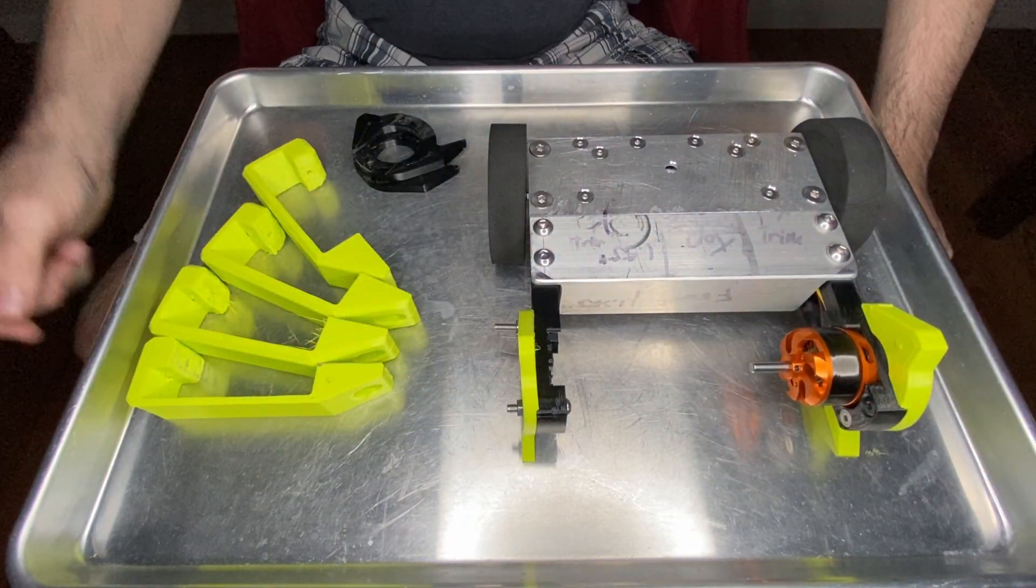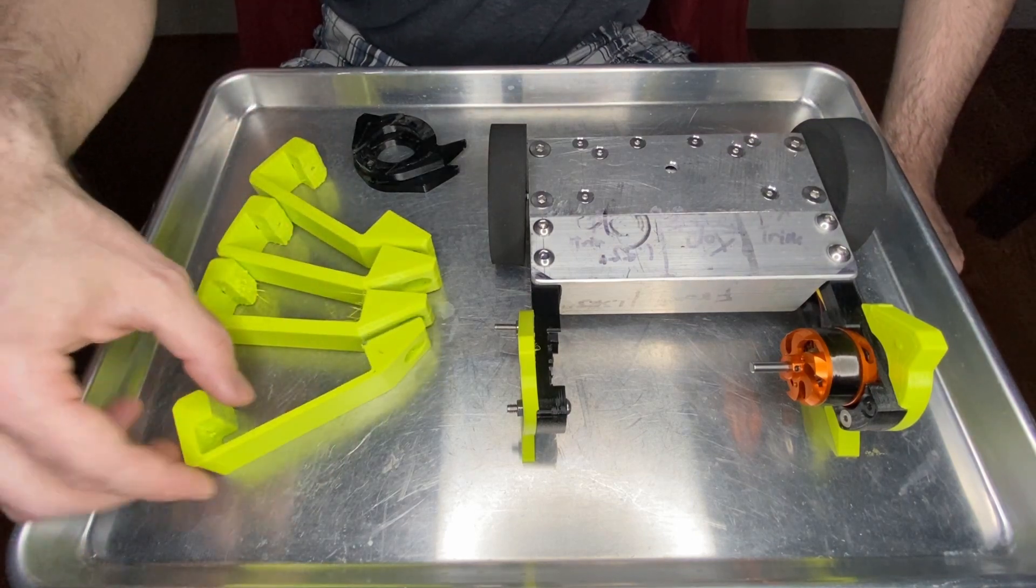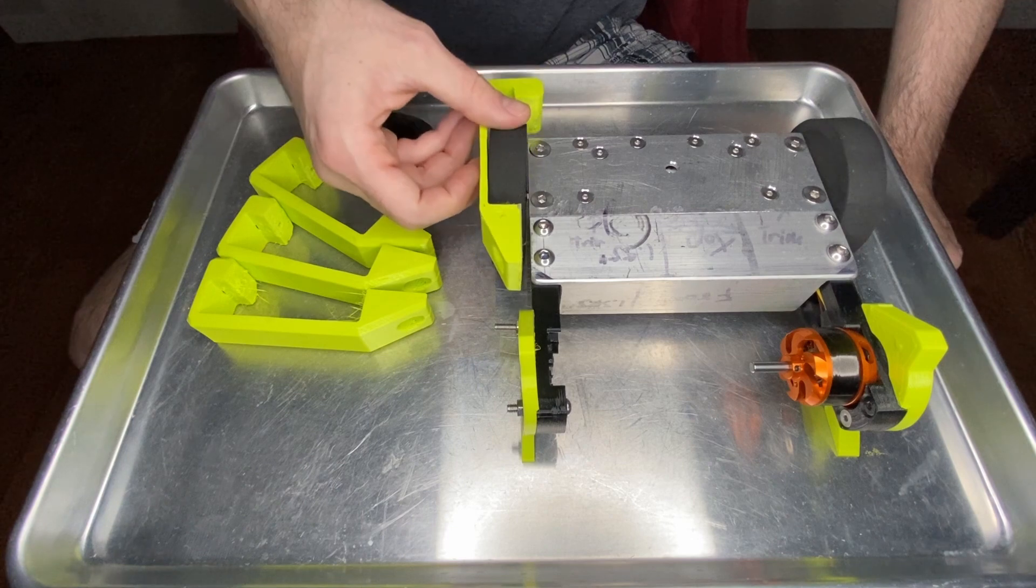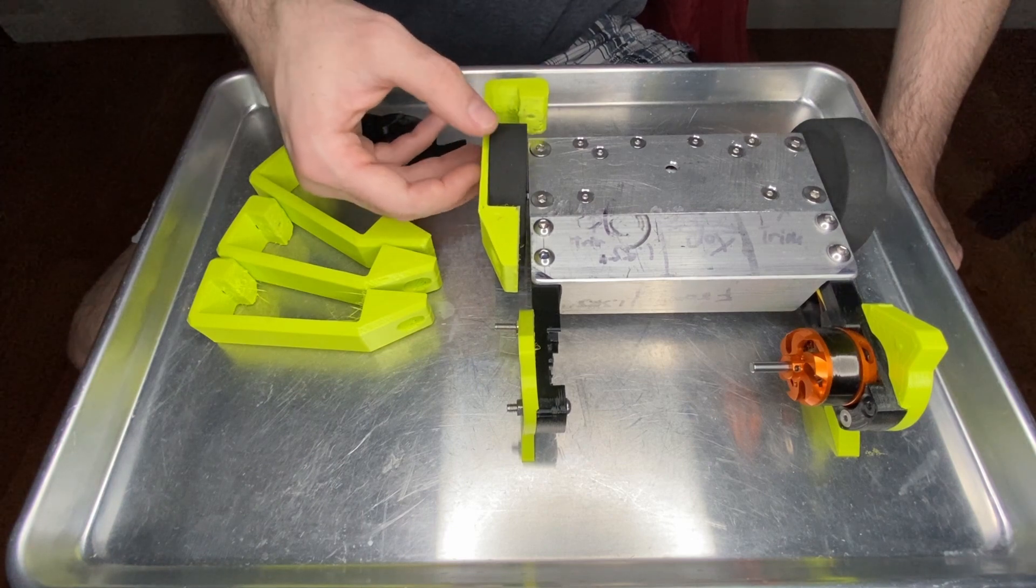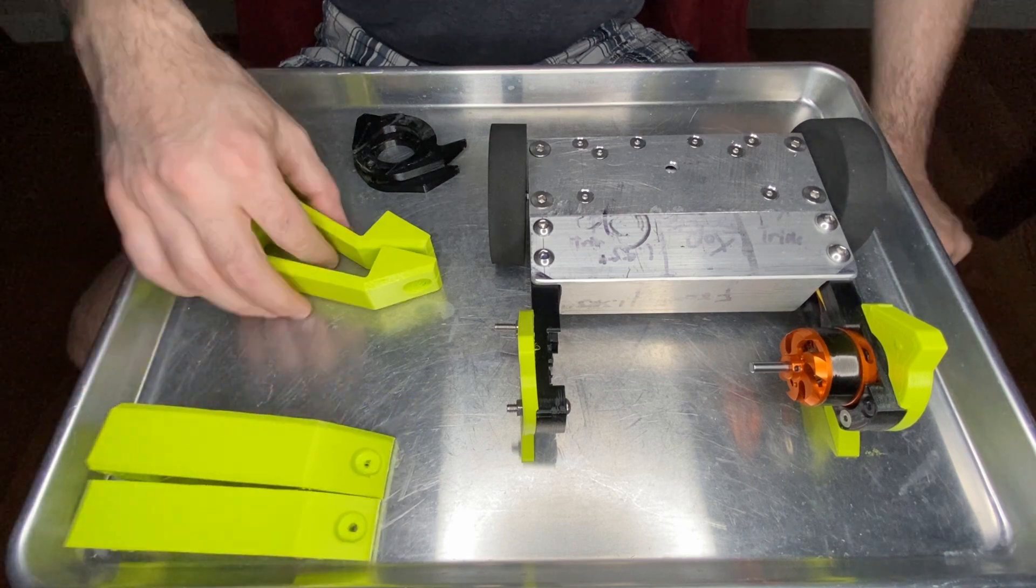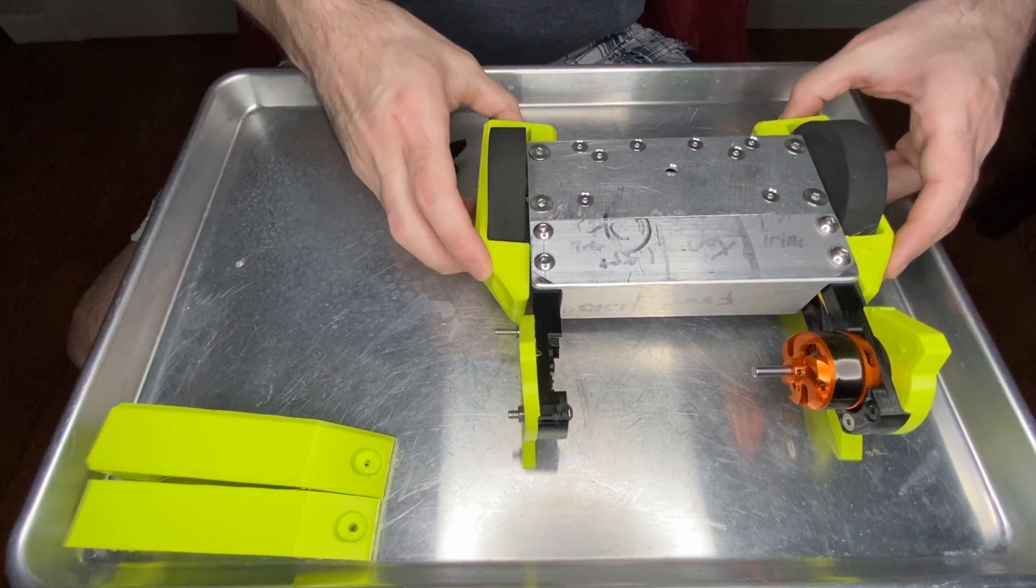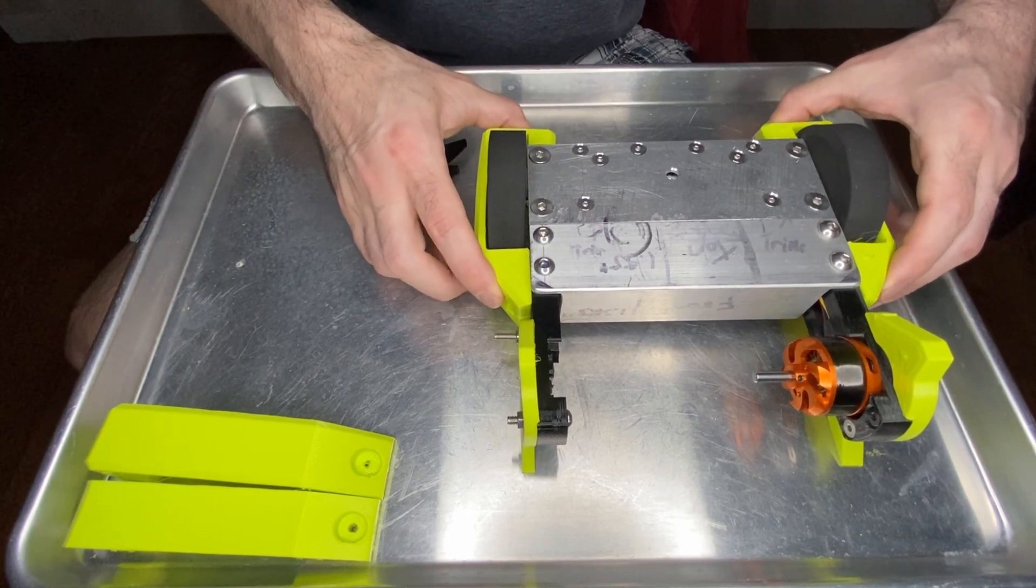Another thing knocked off the list is these, which are iterations of wheel guards. This is the first one, not quite big enough. Then the second one, which was also not quite big enough. Then I printed two of these because they'll definitely work as a first working revision.